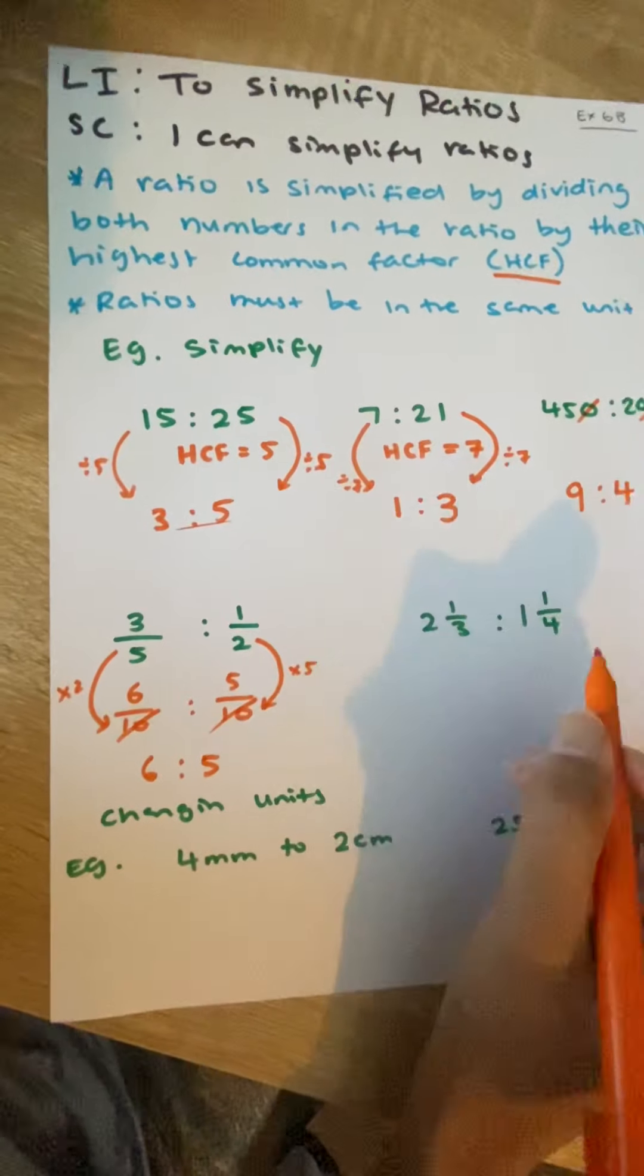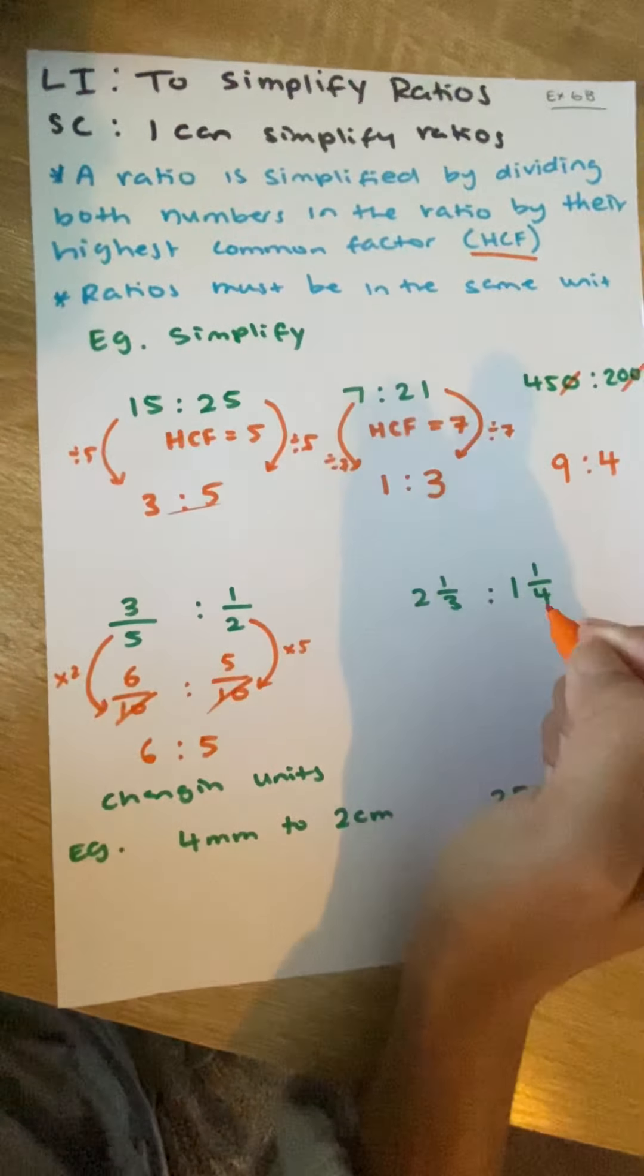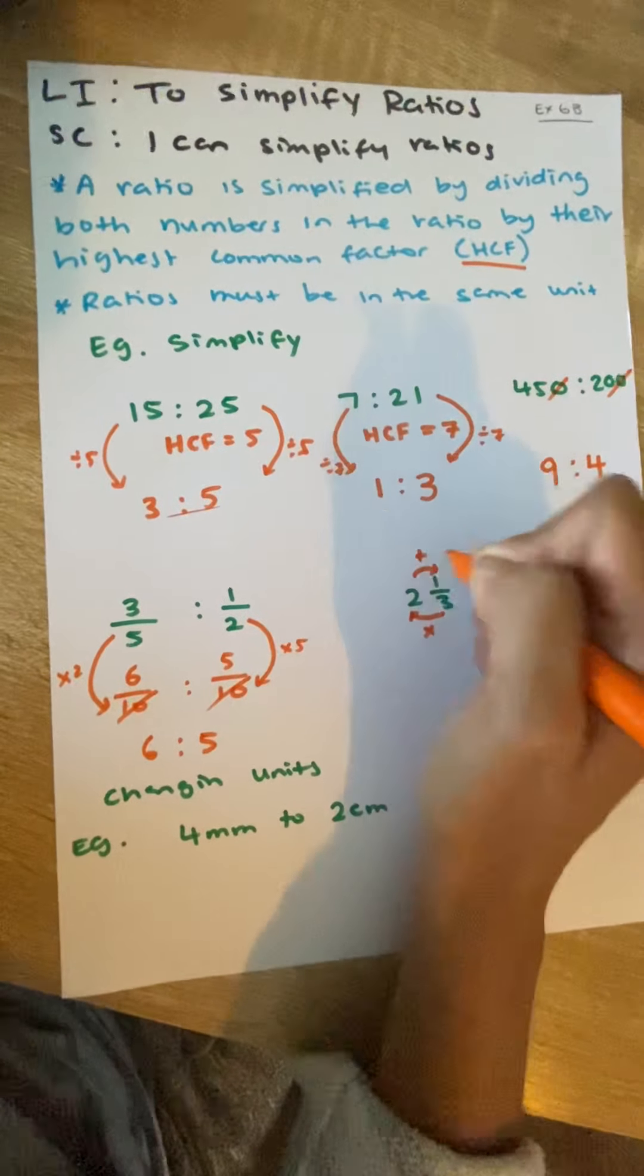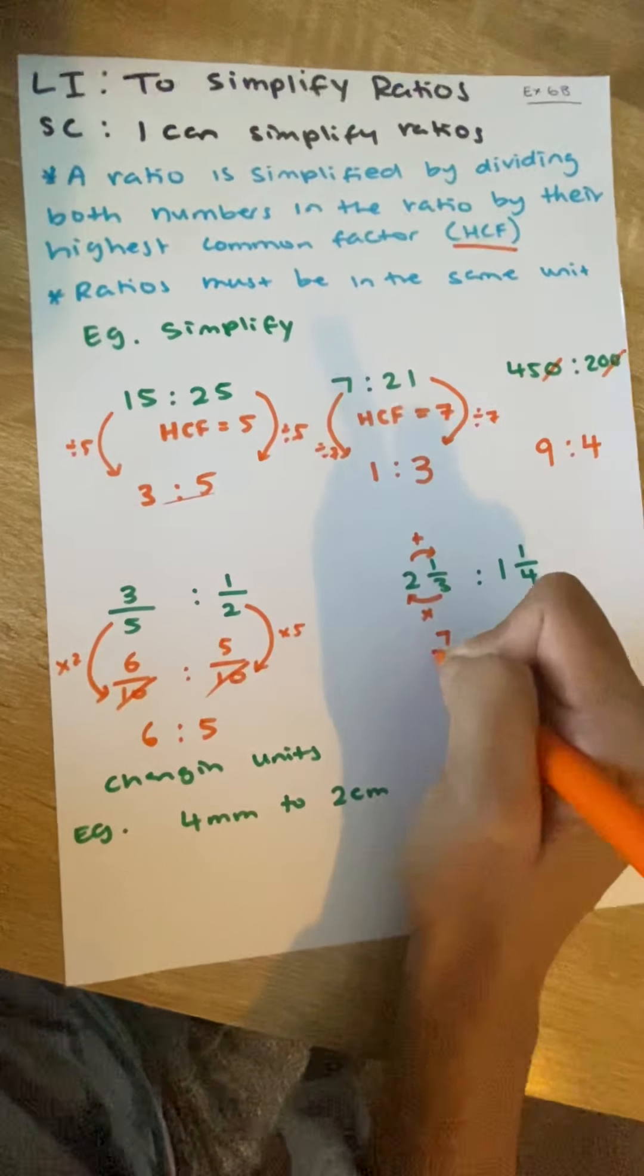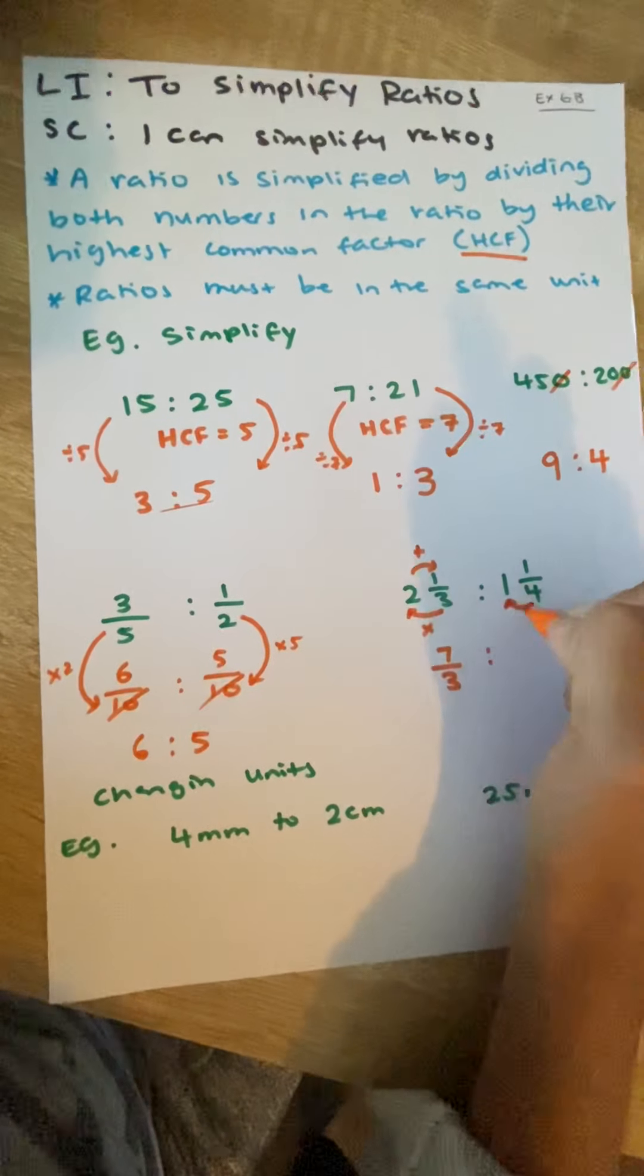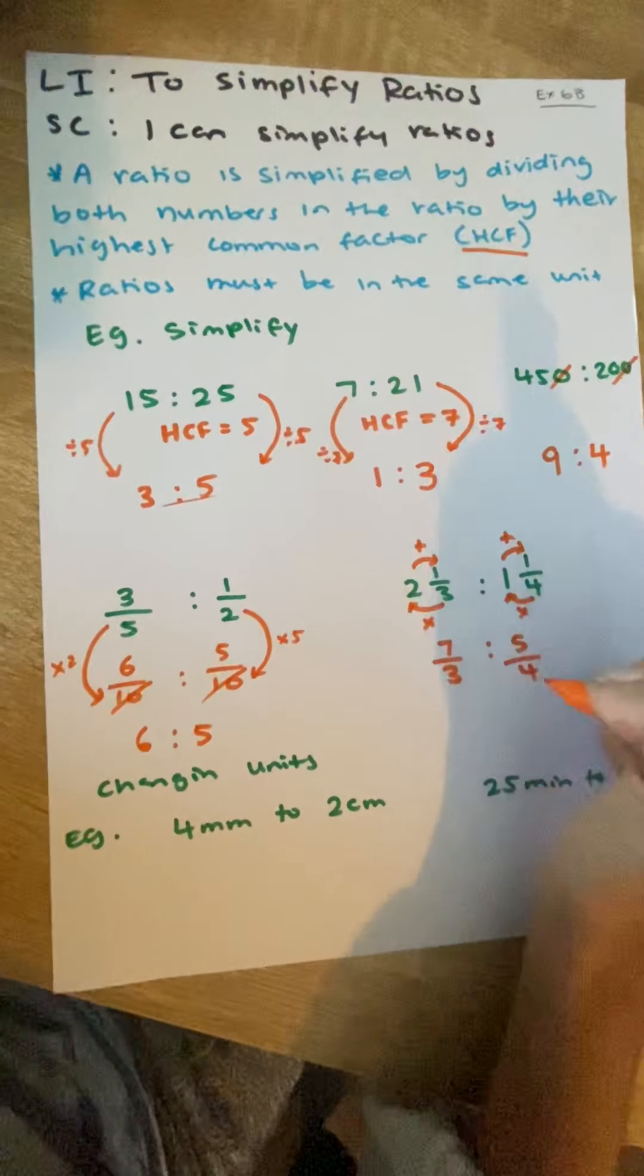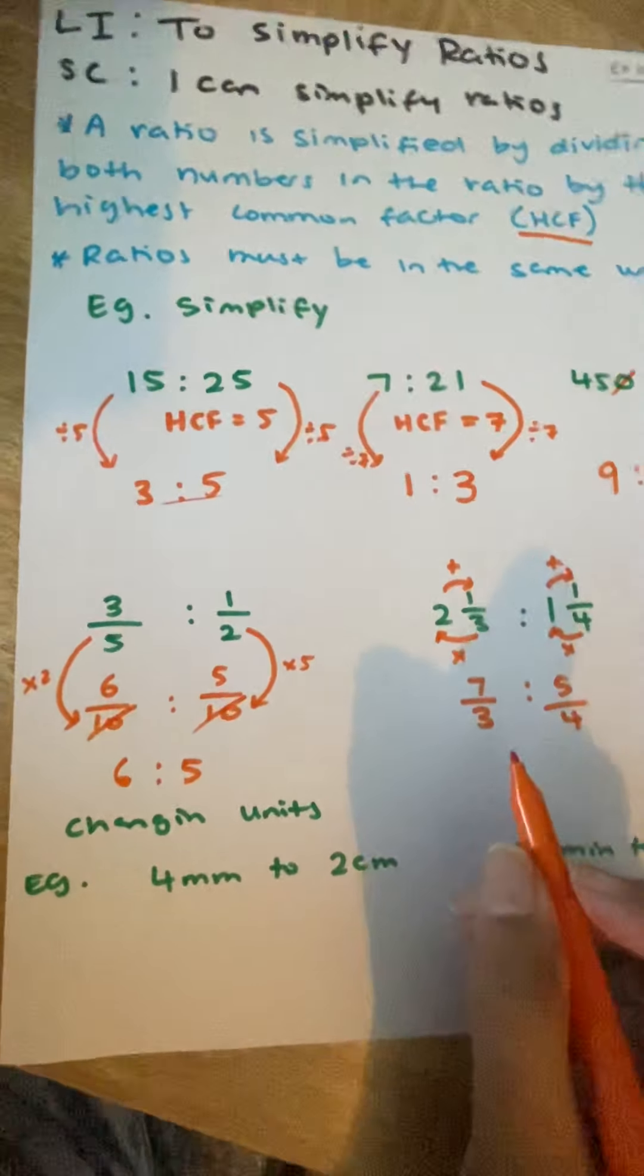So, we've got another one. So, they're both improper. We want to change them to proper fractions. So, sorry. They're proper fractions. We want to change them to improper fractions. Remember, we times and add. So, 3 times 2 is 6. 6 plus 1 is 7. So, that's 7 over 3. And then we do the same here. 4 times 1 is 4. Plus 1 is 5. So, 5 over 4. And we want to make sure that both of our denominators are the same.